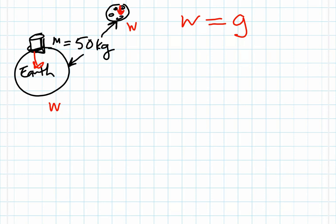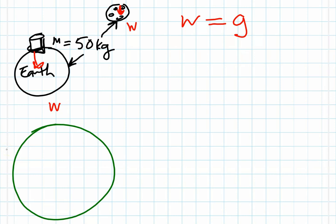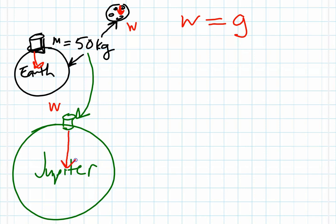If you were on a planet like Jupiter, which is significantly larger than planet Earth, and we had that same 50 kilogram object on Jupiter, Jupiter has a much larger gravitational pull on the mass. So weight is directly proportional to the gravitational pull on any celestial body.